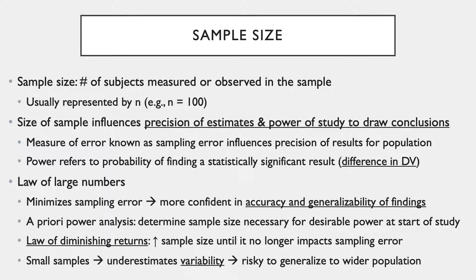Sample size refers to the number of subjects measured or observed in a given sample, usually represented by the letter N. For example, a study with 100 participants would be noted as N=100. The size of the sample influences both the precision of estimates and the power of the study to draw conclusions. Sampling error influences the precision of results for any given population. Power refers to the probability of finding a statistically significant result. The law of large numbers tells us that large samples provide more reliable estimates about population characteristics than smaller samples.